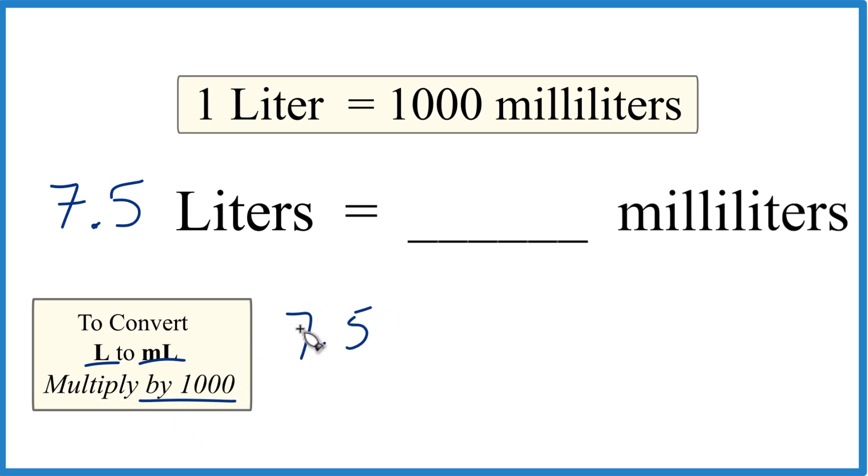7.5 liters times 1,000. And that 1,000, that's 1,000 milliliters in one liter, like this.